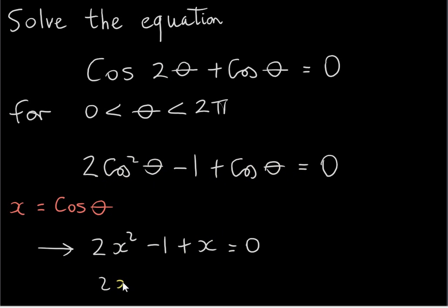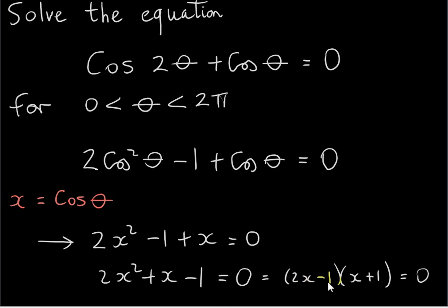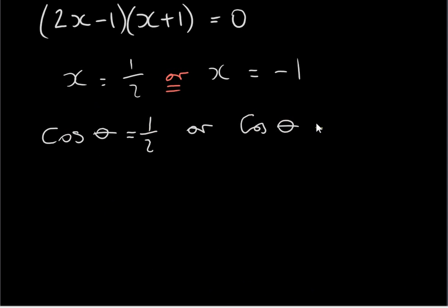If we get this into standard form — putting the x² term first, then the x term, then the constant equals 0 — we can solve this quadratic by factorizing. It has factors (2x − 1)(x + 1), so we put each factor equal to 0 and we get x = 1/2 or x = −1. But x is cosθ, so we get cosθ = 1/2 or cosθ = −1.